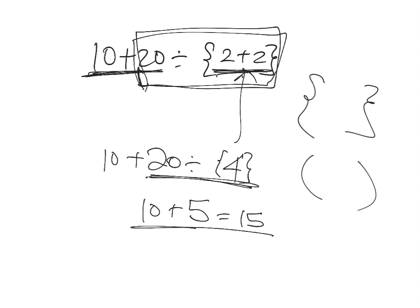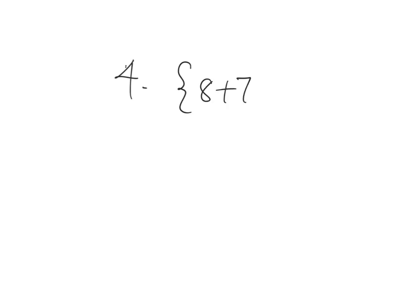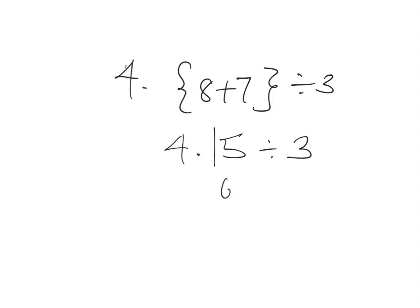So we had ten plus five which equals fifteen — that's the end of that problem. For number thirty-eight, we have four times the quantity eight plus seven, divided by three. We deal with what's in the bracket first: eight plus seven is fifteen. So we have four times fifteen divided by three.